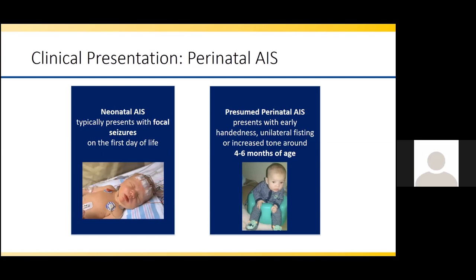The other way perinatal stroke can present is as a presumed perinatal stroke. In these cases, the birth history tends to be very unremarkable and the child does very well at birth. However, typically around four to six months of age, the family will notice that the child has early handedness, unilateral fisting, or increased tone on one side of the body — picked up by the parents or at a routine pediatrician visit. Children should not have a hand preference before the first year of life, and if they do, that should raise suspicion for a perinatal stroke.